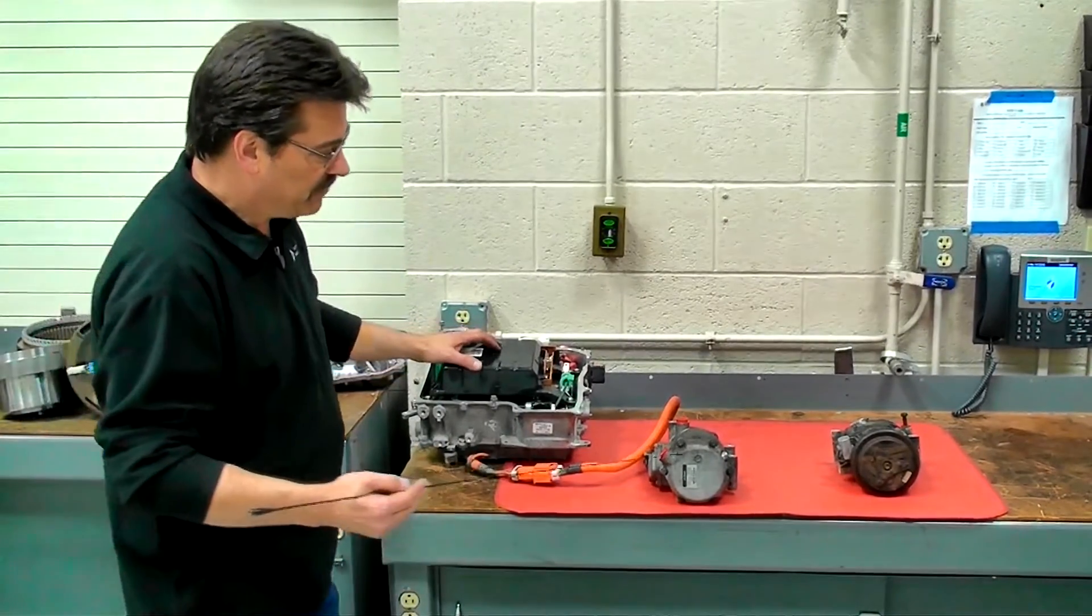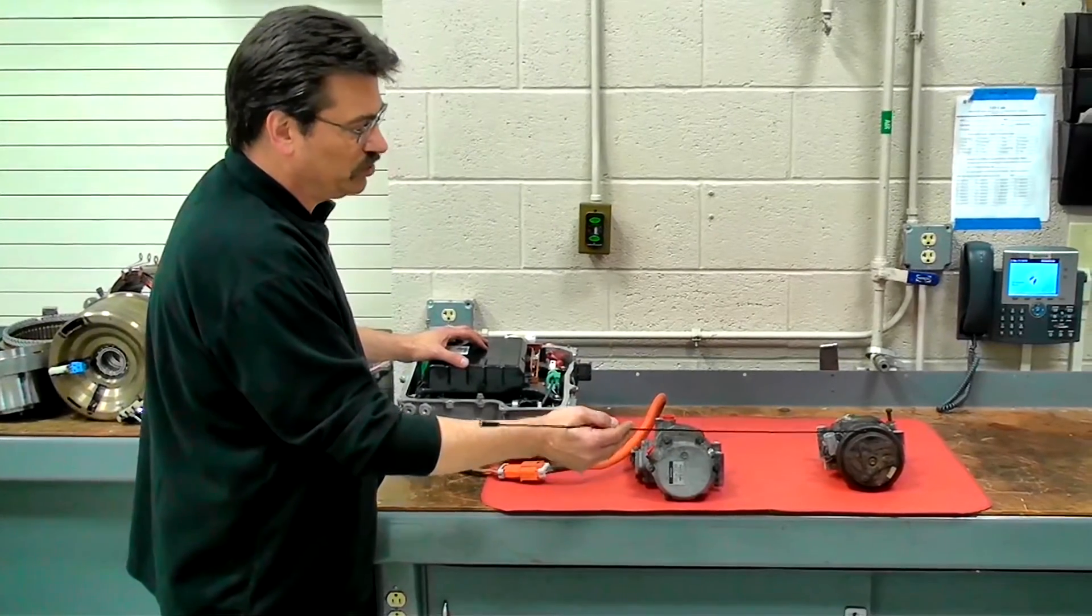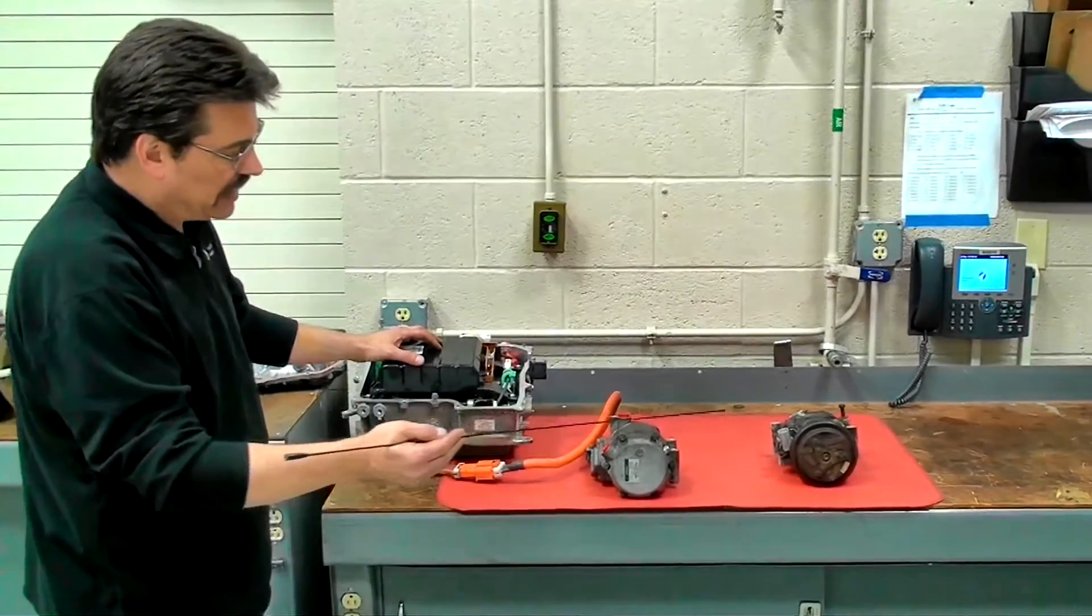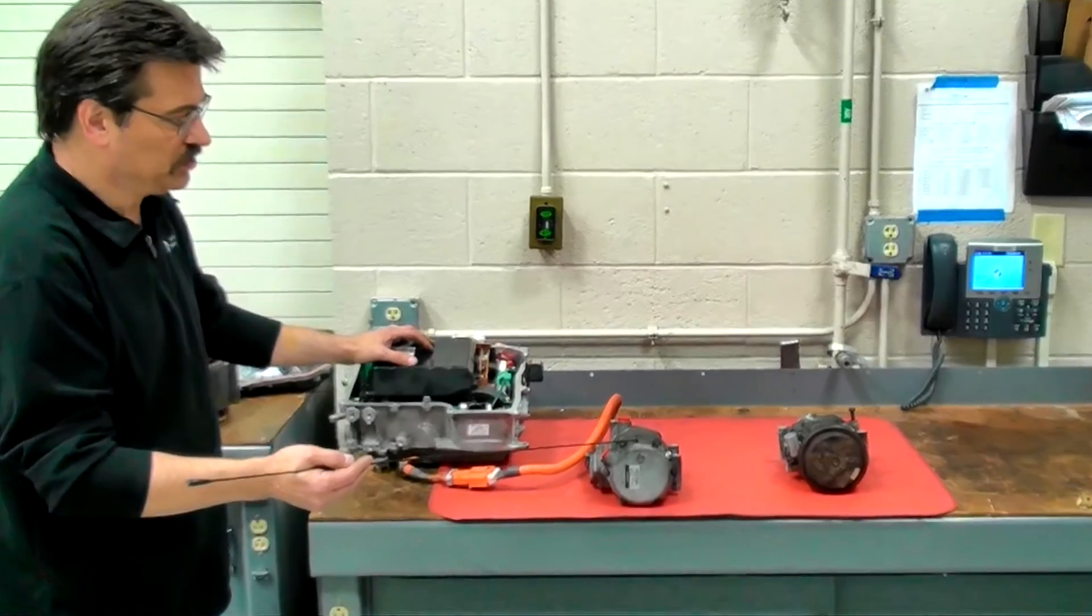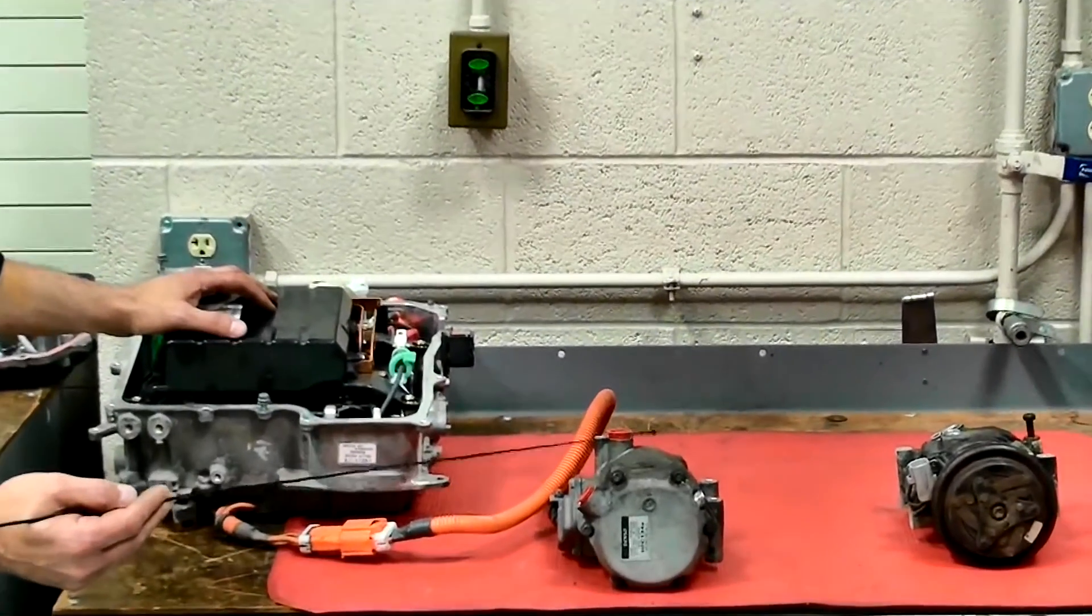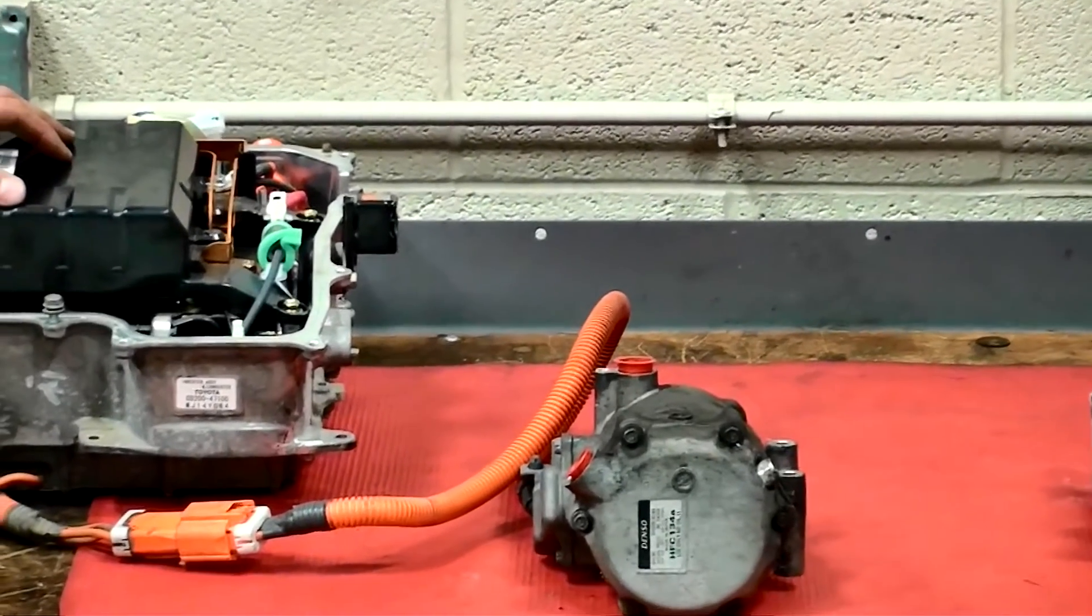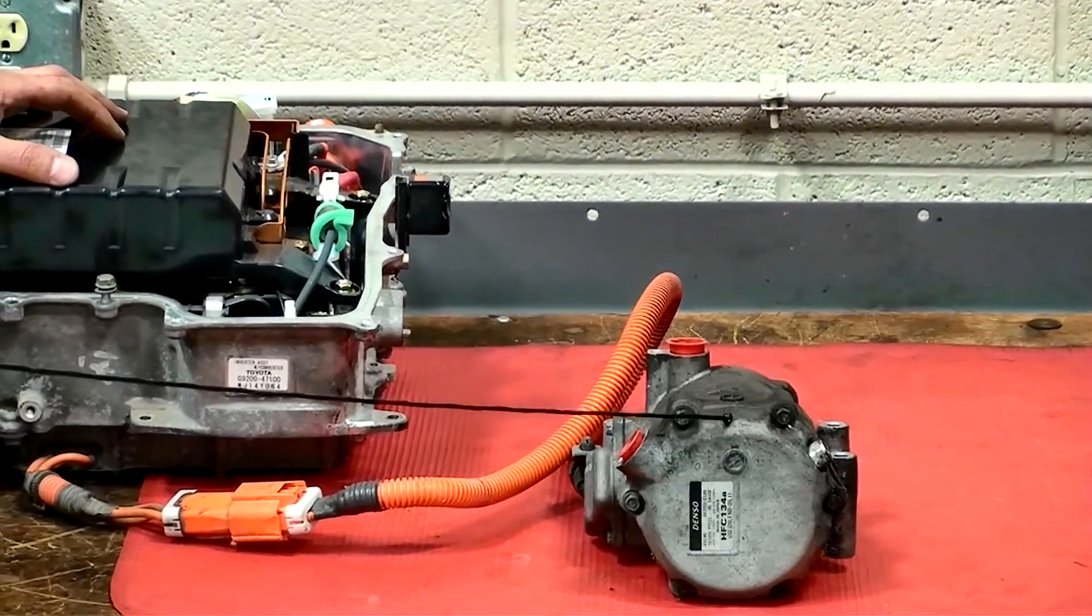On the bench here I have two compressors. One compressor is from a 2001 Toyota Prius that uses a traditional belt-driven compressor. And on your left we have an electric air conditioning compressor from a 2004 Toyota Prius which uses a three-phase power inverter that powers a three-phase motor inside the air conditioning compressor.